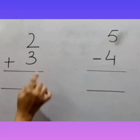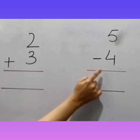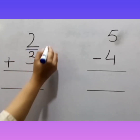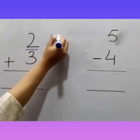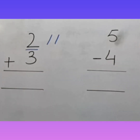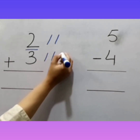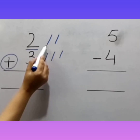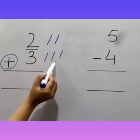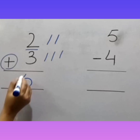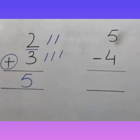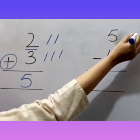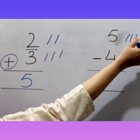Here is number 2 — draw 2 lines: 1, 2. And here is number 3 — draw 3 lines: 1, 2, 3. Here is the sign of addition, so add them. Count with me: 1, 2, 3, 4, 5. The answer is 5. We write number 5 here.